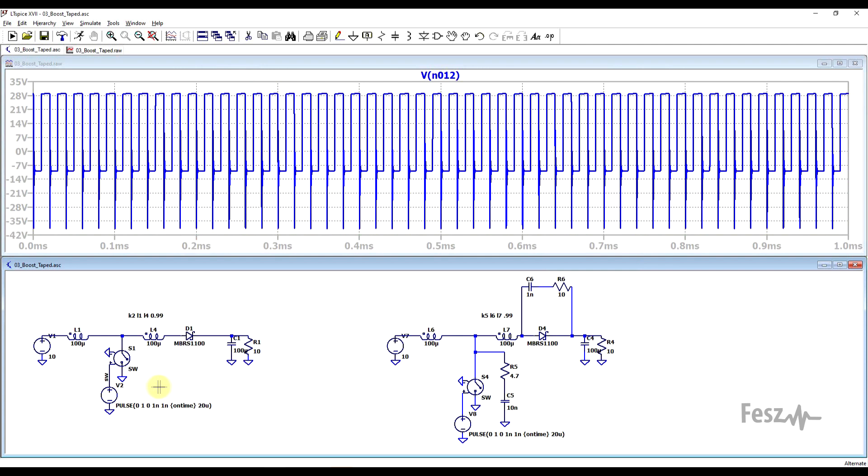So while in other converters using snubbers is more of an option, here these become quite necessary to mainly protect the switching element. The circuit is now usable, but adding resistors will come with unwanted losses. So the tapped inductor converter is realistic and feasible if care is taken to implement it correctly.